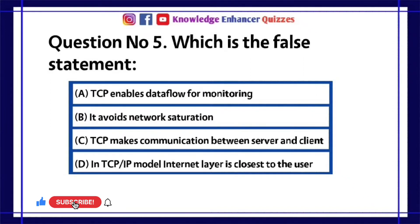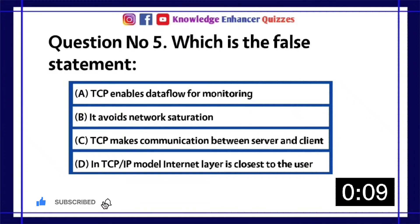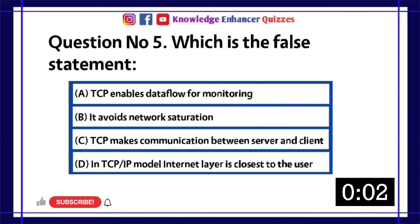Question number 5: Which is the false statement? A. TCP enables data flow for monitoring. B. It avoids network saturation. C. TCP makes communication between server and client. D. In TCP/IP model, internet layer is closest to the user. Option D is the right answer.